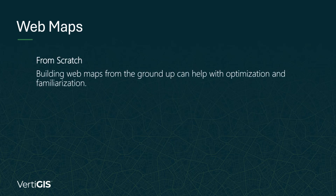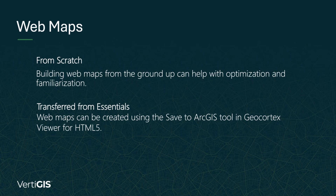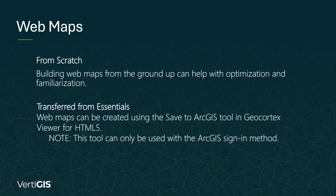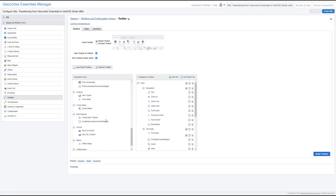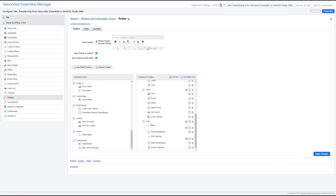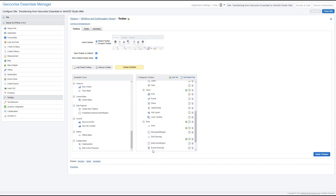Though the best way to get to know how web maps work is to build them from scratch, we do offer a tool to help you copy your mapping data from your GeoCortex viewer into a web map. To use it, you must be able to sign into Essentials Manager and your viewers using an ArcGIS identity. Since the tool saves the web map to ArcGIS Online or Portal, the Windows sign-in method will not work. To get started, let's open up the viewer's toolbar settings in Essentials Manager. In the list of available tools, we want to scroll down to the ArcGIS section and drag the Save to ArcGIS tool into the toolbar.